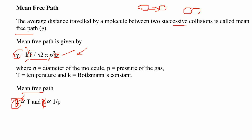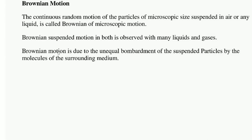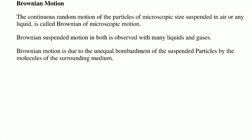The mean free path λ is directly proportional to temperature T and inversely proportional to pressure P. Brownian motion is the continuous random motion of a microscopic-sized particle suspended in air or any liquid. This Brownian motion can be observed in both liquids and gases, and is due to the unequal bombardment of the suspended particle by the molecules of the surrounding medium.